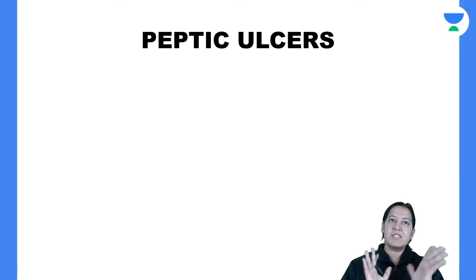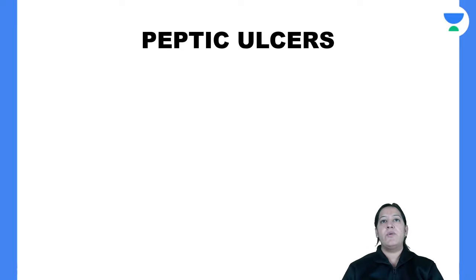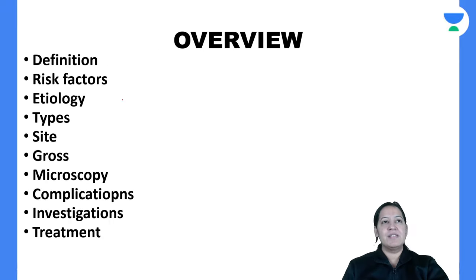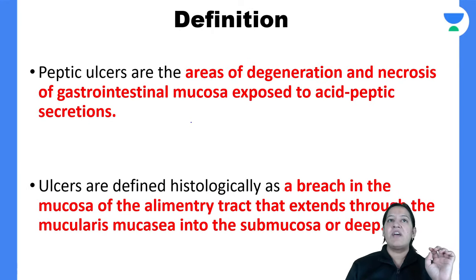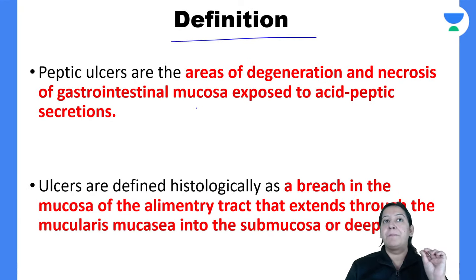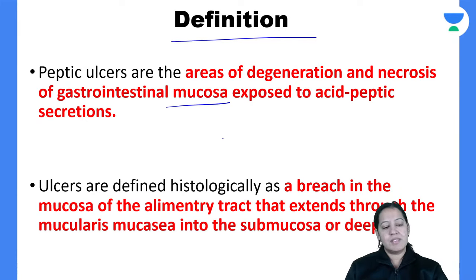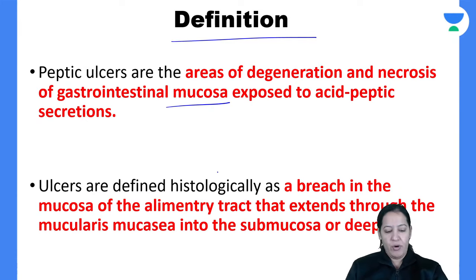I am first going to teach you peptic ulcer. So what is peptic ulcer? I am going to teach you under the following headings. So what is the definition of peptic ulcer? Peptic ulcer is a breach in the mucosa. You know the stomach and the complete GIT have four layers.